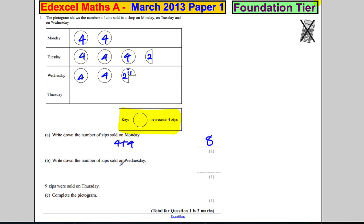Write down the number of zips sold on Wednesday. Well, that's four plus four plus two plus one. Four and four is eight, add two is ten, add one is eleven.